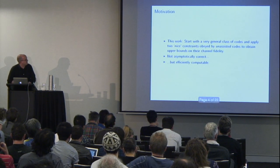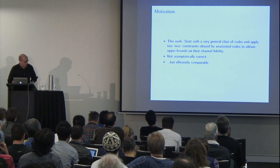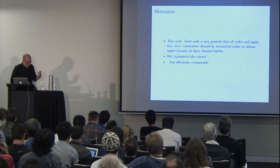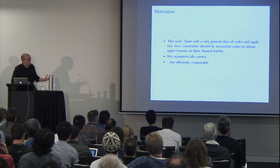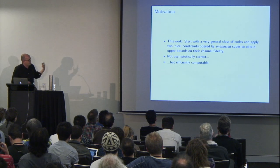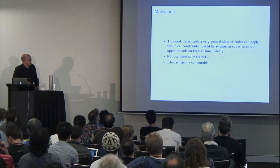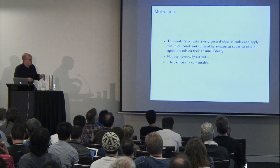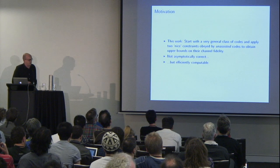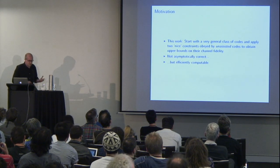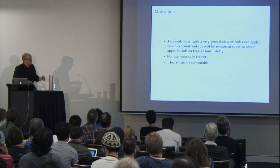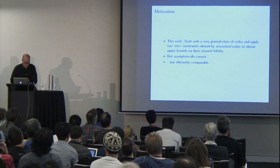But what if we're interested in unassisted codes? In this work, we take the approach of finding bounds on the fidelity for unassisted codes by starting with a very general class of codes and then applying two nice constraints which are obeyed by unassisted codes to get upper bounds on their channel fidelity. These bounds aren't going to be asymptotically correct, but they are at least efficiently computable.